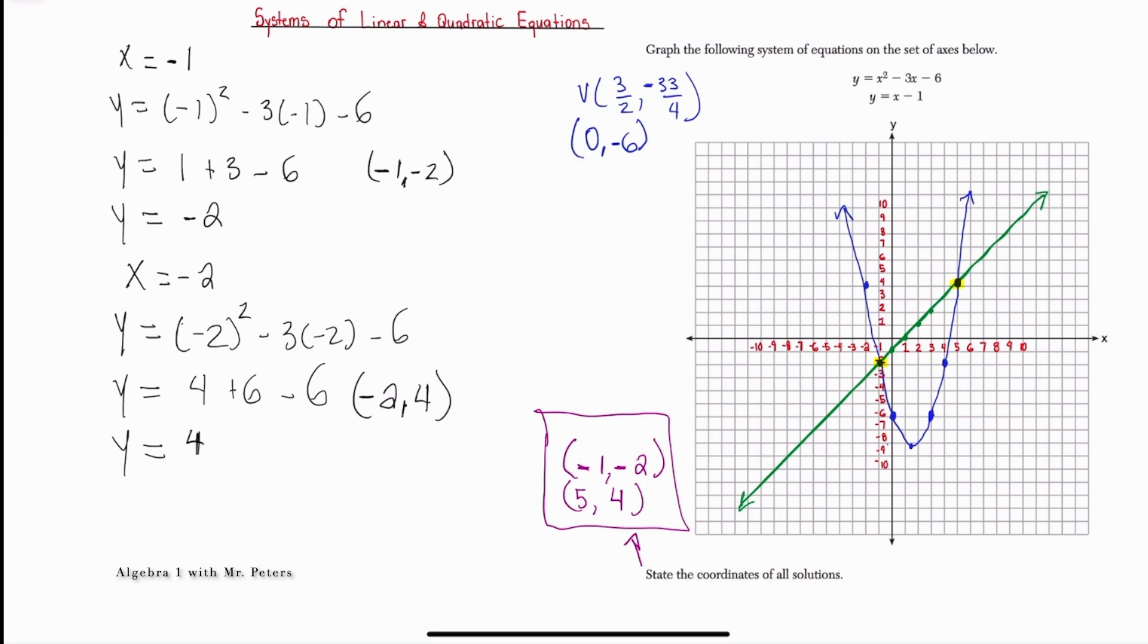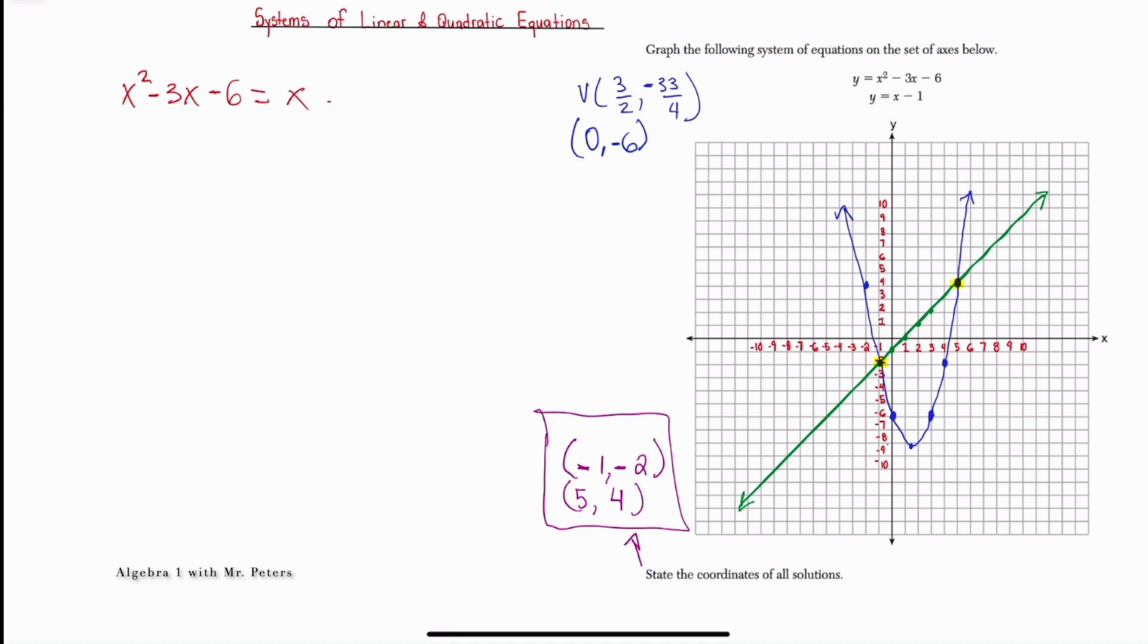Now before we go, I want to show you guys how to solve this same problem if we did not have a graph. We had to solve it algebraically. So if they gave you this problem, and we wanted to solve it algebraically, look at the systems. They both have solved the equation or isolated y, so we could use substitution. So if I set these equations equal to each other, I could solve. So x squared minus 3x minus 6 is equal to x minus 1.